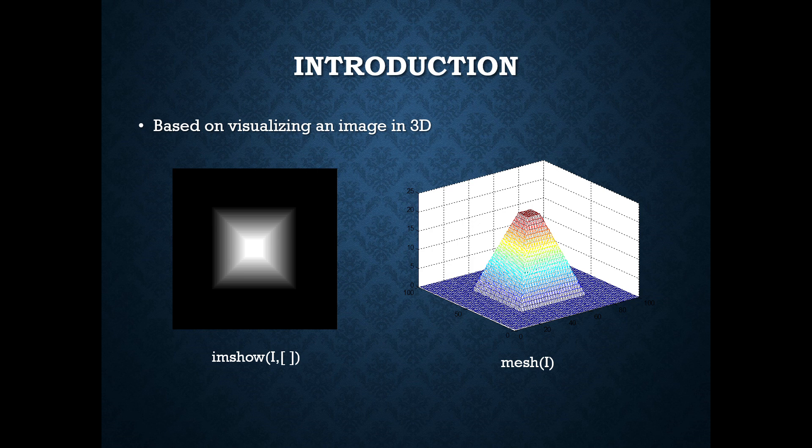Mesh will create a mesh plot which is a three-dimensional surface that has solid edge colors and no face colors. The function plots the values in matrix Z as heights above a grid in the xy plane defined by x and y. The edge colors vary according to the heights specified by Z.